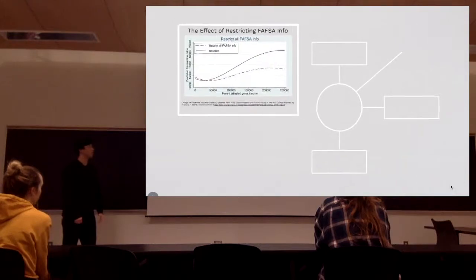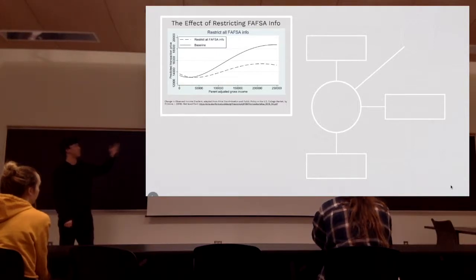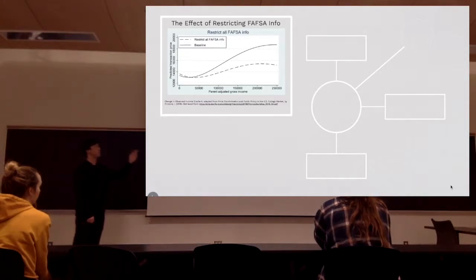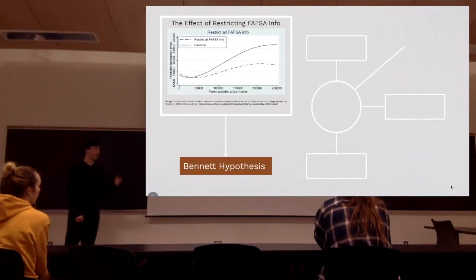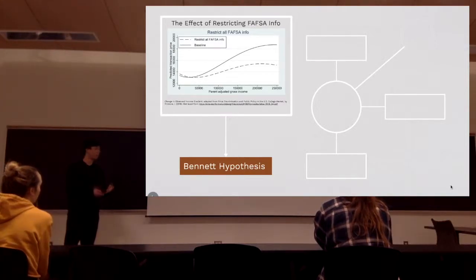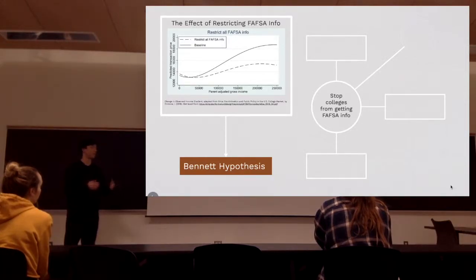In our proposed program, we have a model directed from Professor Fillmore's model. The dashed line shows the effect of restricting all FAFSA information to colleges, while the line above represents the baseline of the current situation. There is a substantial decrease in college tuition after we restrict FAFSA information. The theory behind this is called the Bennett hypothesis, which says that when there is increased federal aid to colleges, the college would either increase tuition overall or decrease their own institutional aid. So our resolution is mainly focused on stopping colleges from accessing FAFSA information so that they cannot price discriminate students.